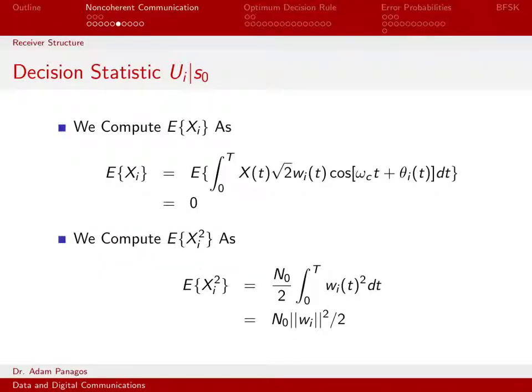We have handled the deterministic portion of our decision statistic. Now let's handle the random portion. We need to compute both the expected value and the variance of X_i. If we go back to that integral equation, this was our expression for X_i. To compute the mean, I just need to take the expected value of the whole thing. We can flip expectation and integration. Once you bring in the E here, you have E just around X(t). X(t) is zero mean additive white Gaussian noise, so it has a mean of zero. This whole integral just turns into zero. So our noise component has a mean of zero.